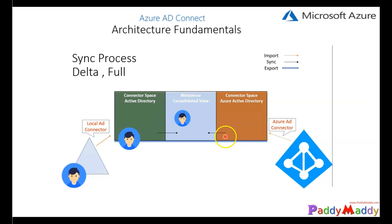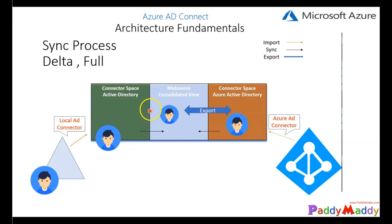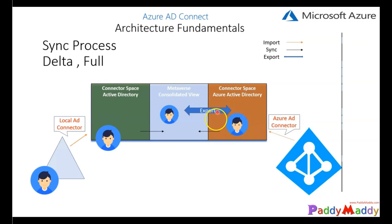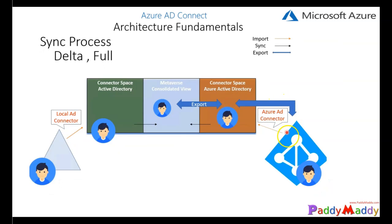Similarly, from Azure AD also, this process is initiated into Metaverse. In the background, it will validate those objects — once the importing process is done, it has to go for the sync process as well as the export. This entire consolidated view gets exported to your Azure Active Directory. That's one of the reasons why, if you see the sync process in between, it will be in a halt for some time in the Azure Active Directory space. Once this export completes, it has to go for another level of sync process, and once the sync is completed, the objects will be visible in Microsoft Azure Active Directory.